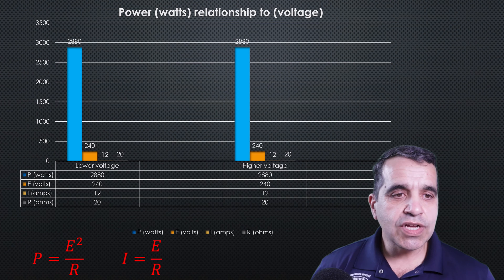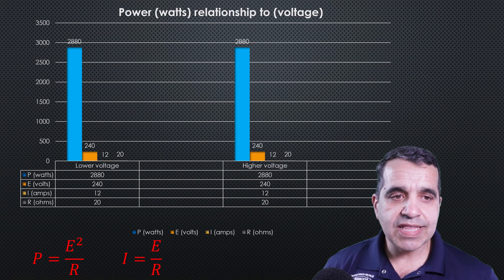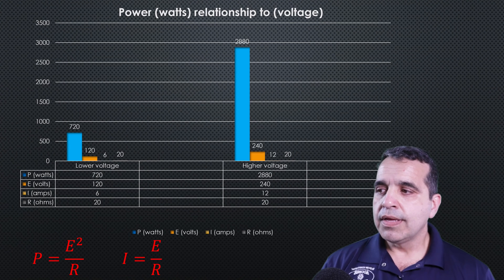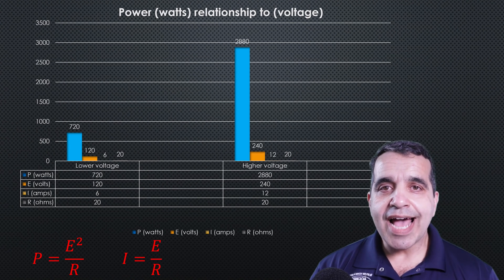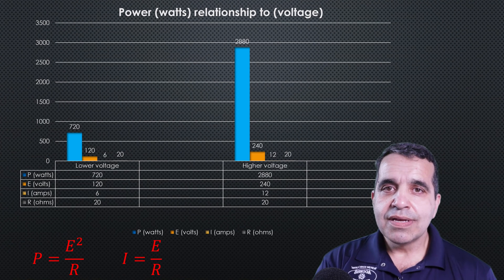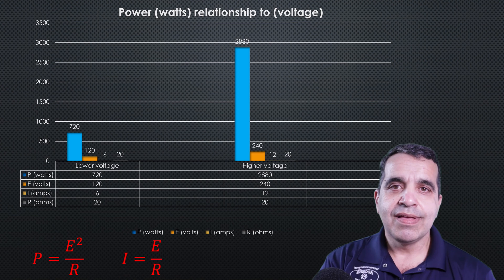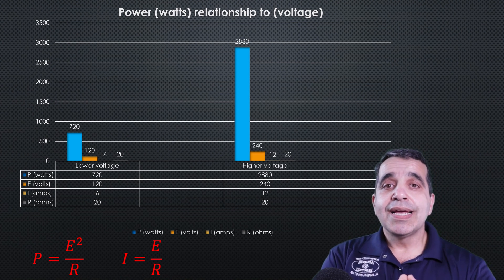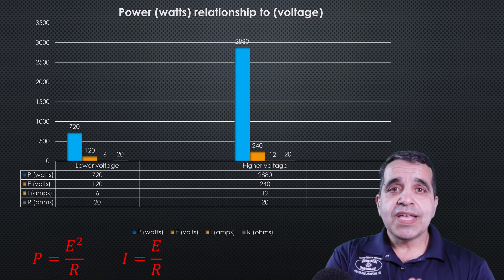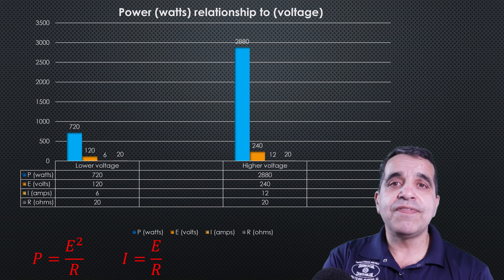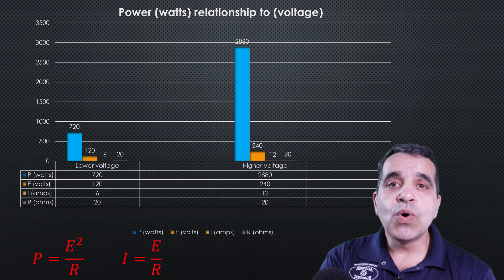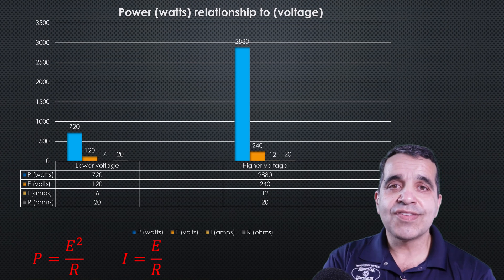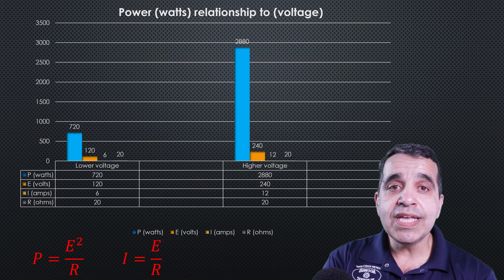So now if I took the voltage on one of these, I'll take the left hand side and I cut the voltage in half, but my wattage got reduced by four times. So since power is directly proportional to the square of the voltage, if I cut the voltage in half, I will affect the power by four times. I'll get four times less work out of this circuit, even though the voltage is only cut in half.